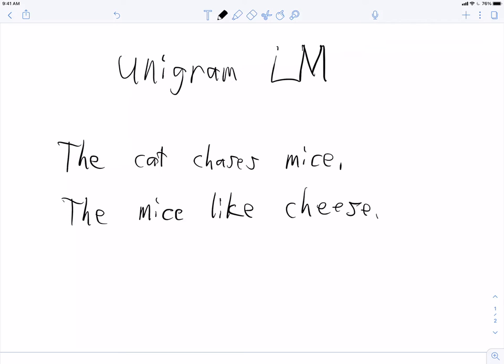The cat chases mice. The mice like cheese. Okay? So, there's two example sentences. So, a unigram language model would just ask, what is the probability of the? Or, what is the probability of cat? So, it's going to treat each word in isolation.